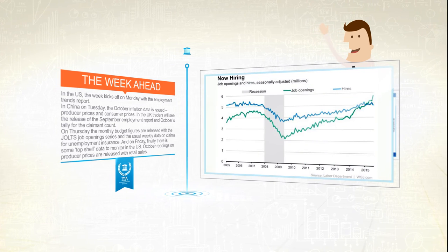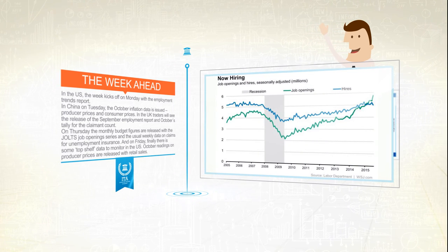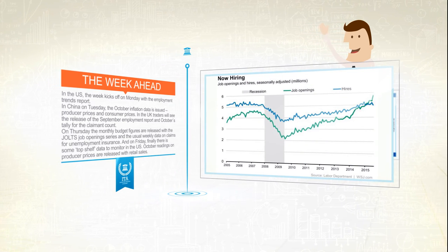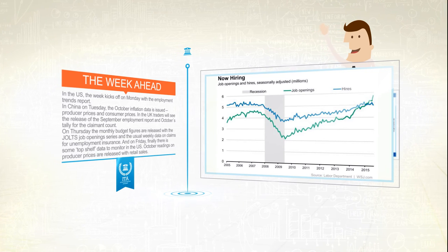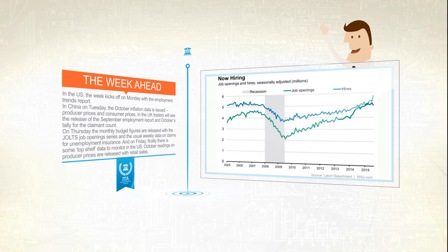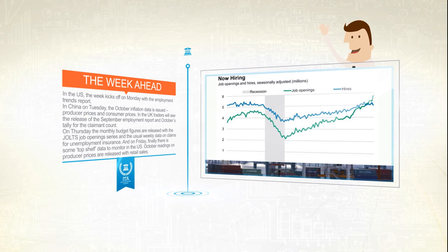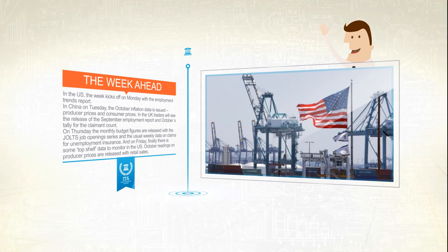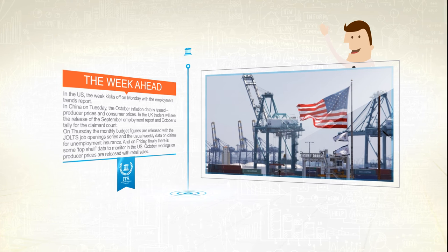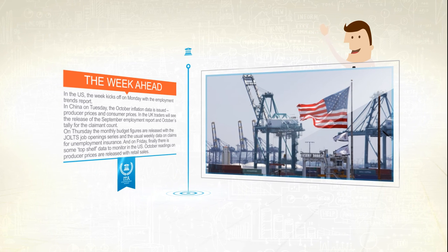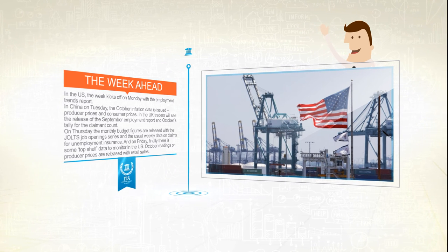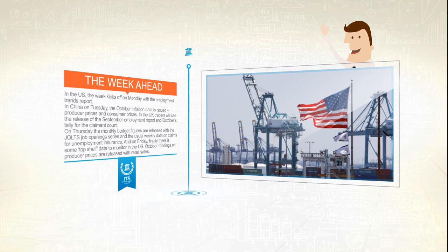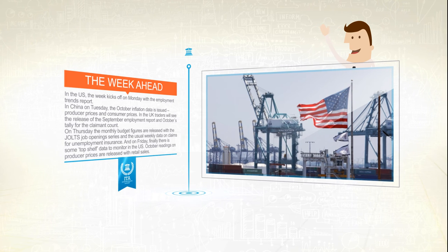On Thursday, the monthly budget figures are released with the JOLTS job openings series, plus the usual weekly data on claims. And on Friday, there is some top shelf data to monitor in the US — October readings for producer prices are released with retail sales.